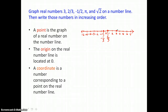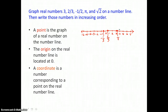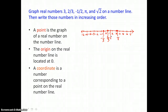Pi is approximately 3.14, so we'll find that just to the right of three. We'll locate, label, and graph with a point. The square root of two, if you put it in your calculator, is approximately 1.4, so we'll locate that between one and two, label with the coordinate square root of two, and graph with a point.